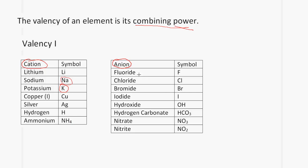In the case of the anions: fluoride has a valency of one, symbol F. Chloride has a valency of one, symbol Cl. Bromide has a valency of one, symbol Br. Iodide has a valency of one, symbol I. Hydroxide has a valency of one, symbol OH. Hydrogen carbonate has a valency of one, symbol HCO3. Nitrate has a valency of one, symbol NO3. Nitrite has a valency of one, symbol NO2.